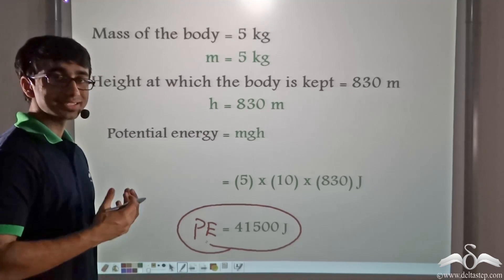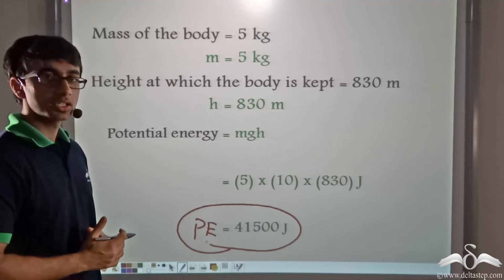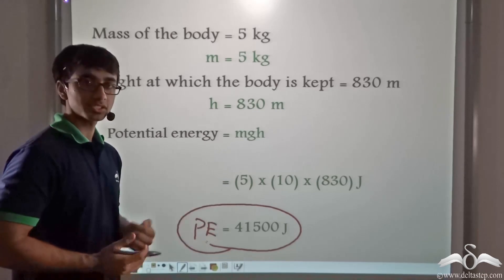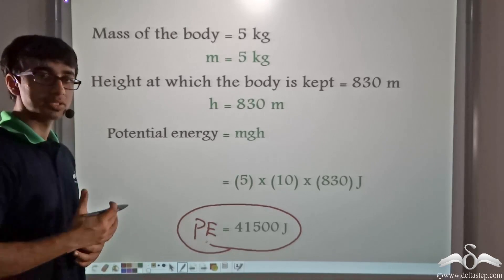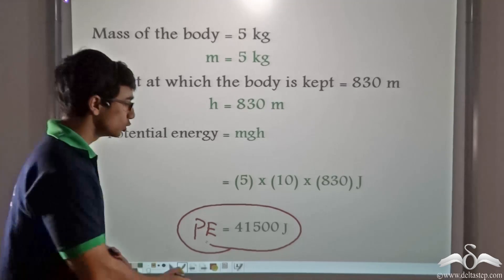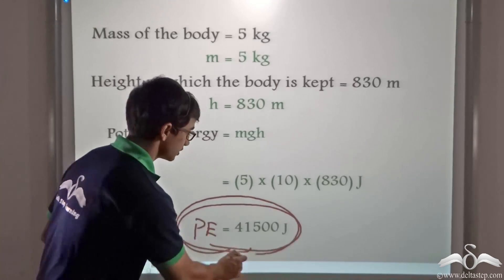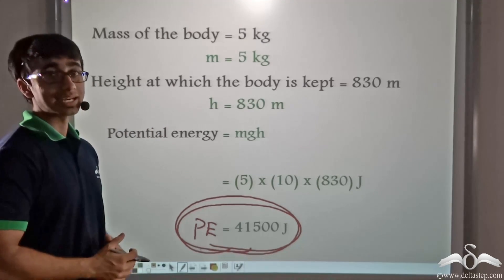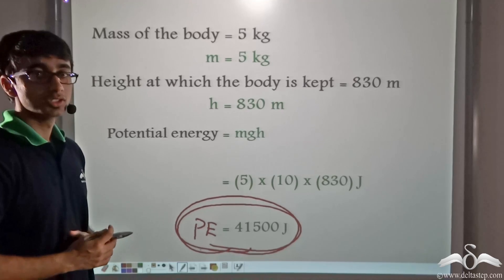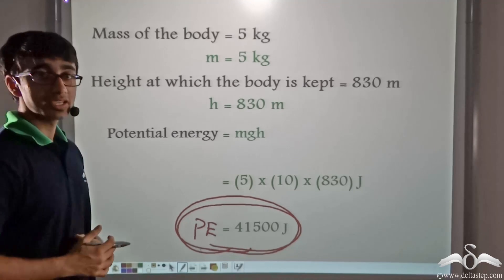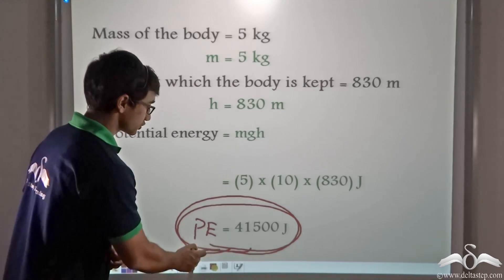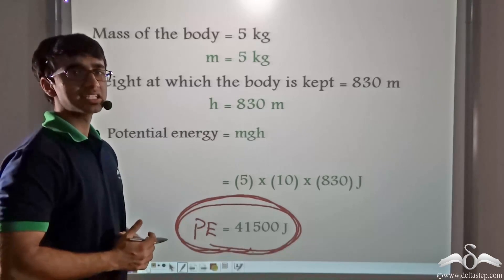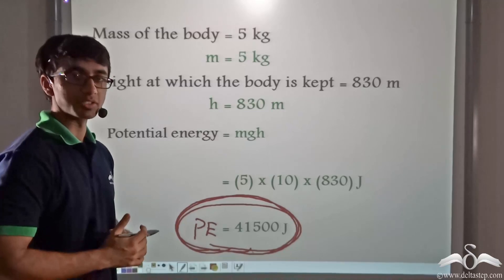The ball kept at the top of Burj Khalifa has a potential energy of 41,500 joules, and it will have the capability to do this amount of work on any object or body it hits — a significant amount. So you better not be in the path of the ball when it falls from the top of Burj Khalifa, because it is going to cause a significant amount of damage.